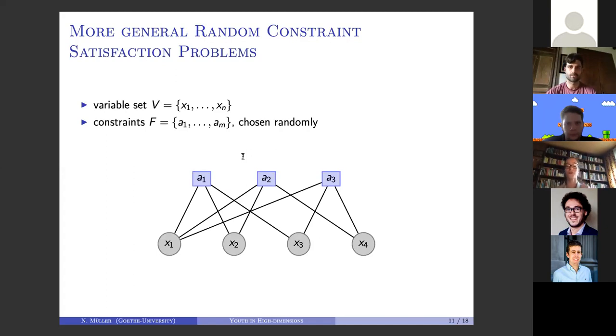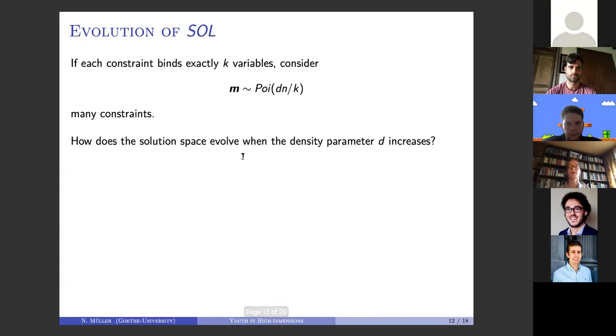Your constraints are the square nodes and the variables are the round circle nodes. Each constraint binds exactly the same number of variables. Then you assume that you have a Poisson number of constraints for simplicity, such that on average each variable participates in d constraints. The question is how the solution space evolves when the density parameter d increases.